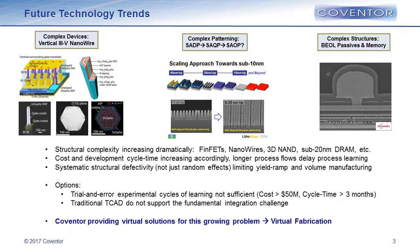Cost and development cycle are growing with that structural complexity. What's limiting volume manufacturing is systematic structural defectivity, not just random. We can run more and more wafers in the fab, doing trial and error experiments, but that's extremely expensive and time-consuming. Traditional TCAD solutions really don't address this fundamental integration and structural challenge.